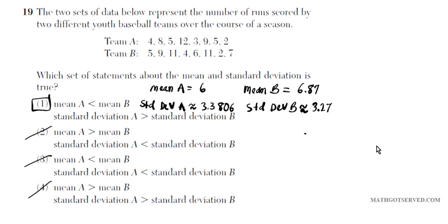For problem 19, you use your calculator to figure out the mean of A, the mean of B, and then your standard deviations. Compare the results from your calculator, and you will see that the answer is option number one.